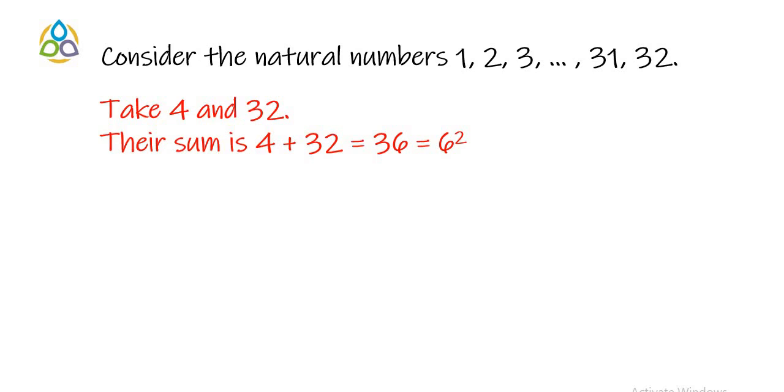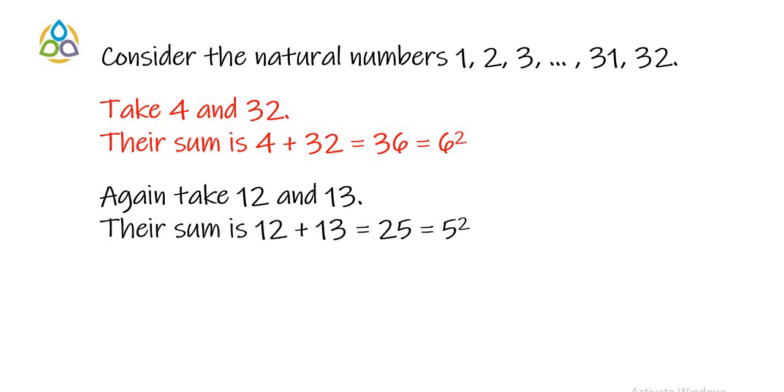Similarly, from this first 32 natural number take 12 and 13. What is the sum of 12 and 13? It is 25 and 25 means 5 into 5. So we can write it as 5 square.